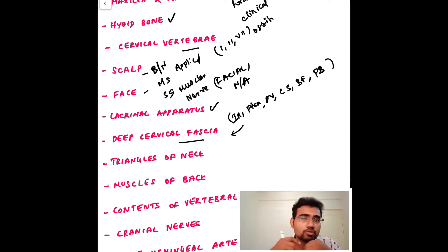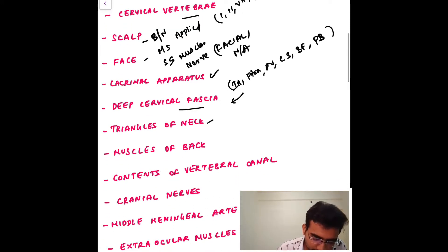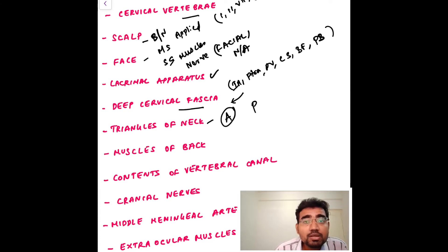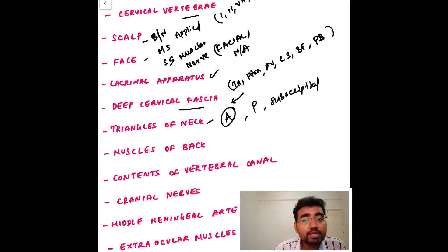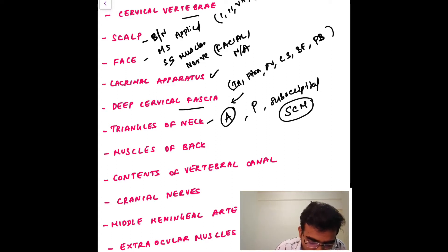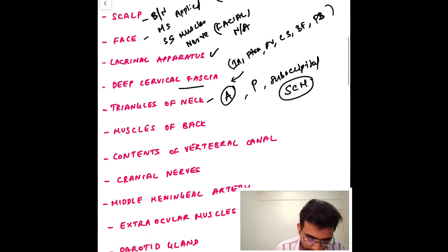Whatever topics you feel are difficult, write them on a piece of paper, stick it to the wall, and constantly revise. For the triangles of the neck, you should know the anterior triangles — including the submental and digastric triangles — the posterior triangle, and the suboccipital triangle. In the triangles, also read about the sternocleidomastoid muscle.